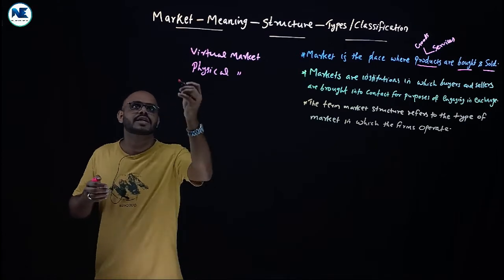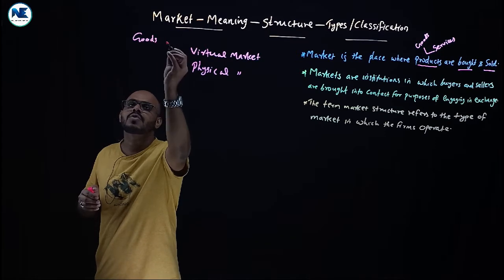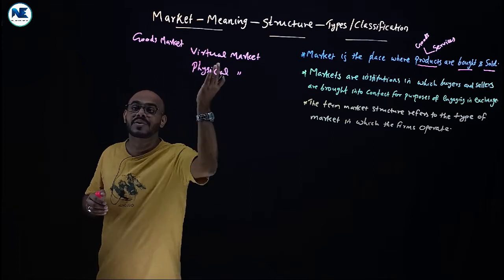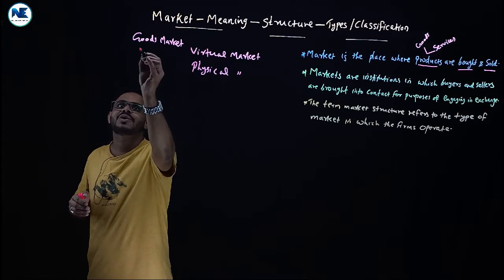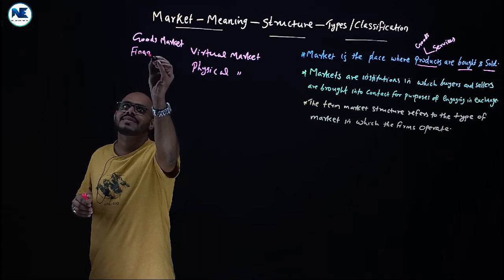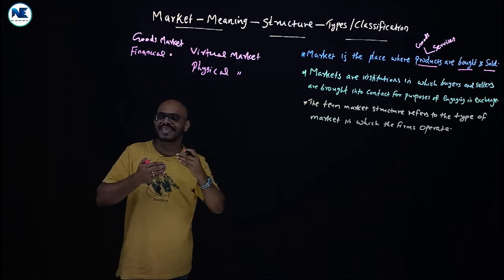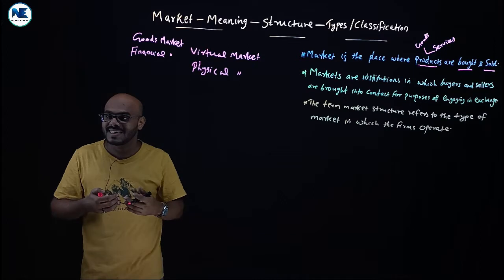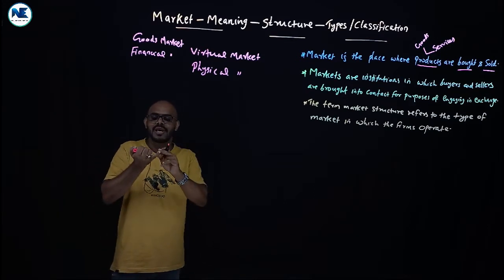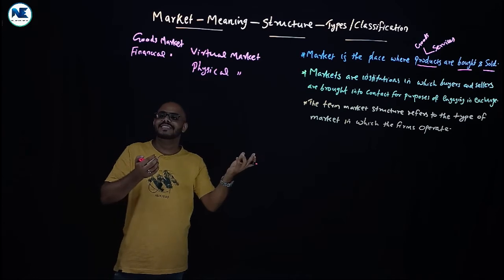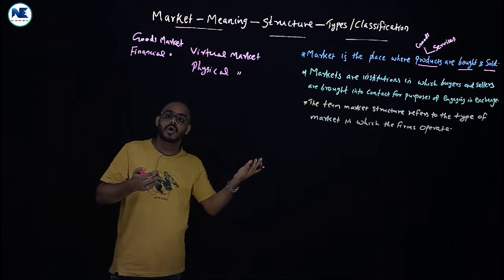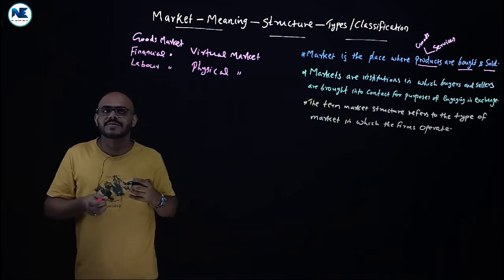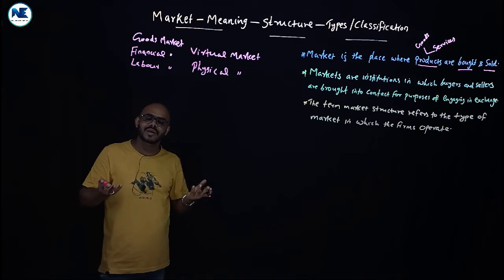For example, we have a goods market. We also have a financial market or money market, where financial instruments are bought and sold. Financial instruments include shares, debentures, bill of exchange, treasury bill, promissory note, and so on. Then we have a labor market. So to summarize: goods market, financial market, labor market, physical market, virtual market, retail market, wholesale market, and so on.